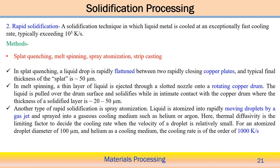Another solidification processing technique is rapid solidification, where cooling occurs at a very high rate — typically around 10⁵ Kelvin per second. Different methodologies used to achieve rapid solidification include splat quenching, melt spinning, spray atomization, and strip casting. Through these techniques, very rapid solidification of the material can be achieved.